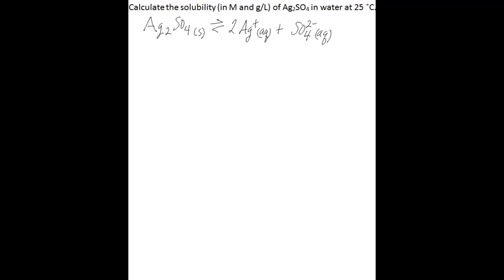Your reactant will be silver sulfate solid, and that's going to dissolve to give you two silver cations plus one sulfate anion. Next, look up the Ksp for silver sulfate at 25 degrees Celsius in a table of solubility product constants. The Ksp for silver sulfate is 1.2 times 10 to the negative 5 at 25 degrees Celsius — note that Ksp varies with temperature.